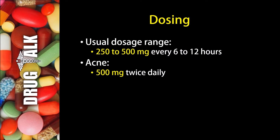Now what about dosing with tetracycline? The usual dosage range would be 250 to 500 milligrams every 6 to 12 hours. For example, in the treatment of acne, we would see 500 milligrams given twice daily.